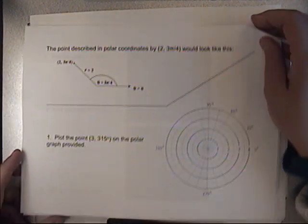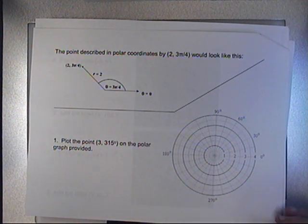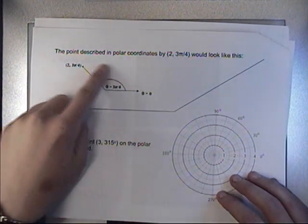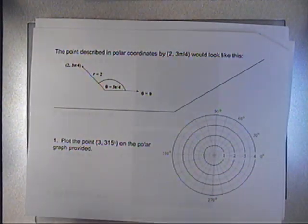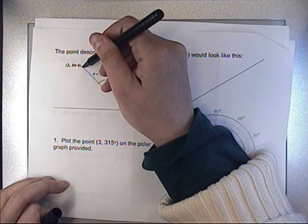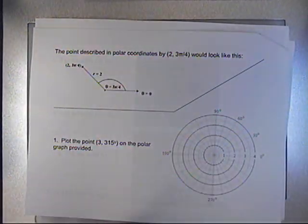For example, if you wanted to describe a point, you could say this point is 2 units away from the origin at a rotational position of 3π over 4. That would be right here. It's exactly 2 units away from the origin, and it rotated around over to 3π over 4.